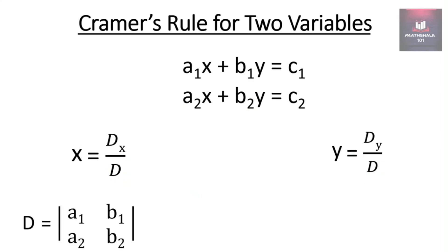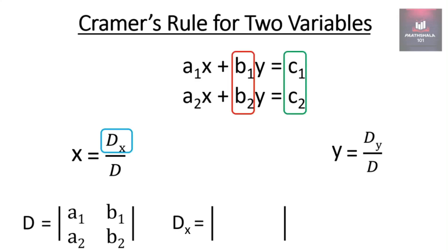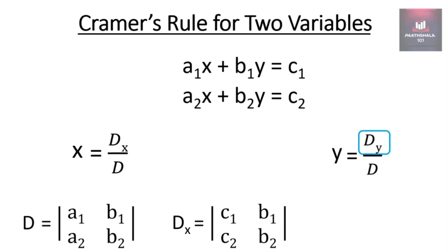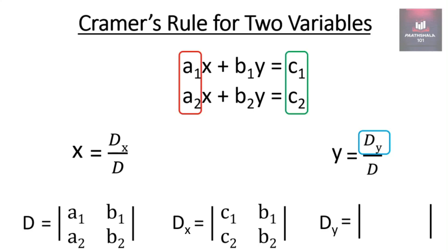Now let us understand how to find Dx. Dx equals the determinant of the constants, that is c1 and c2, and the coefficients of y, that is b1 and b2. For finding Dy, Dy equals the determinant of the x-coefficients, that is a1 and a2, and the constants, that is c1 and c2.